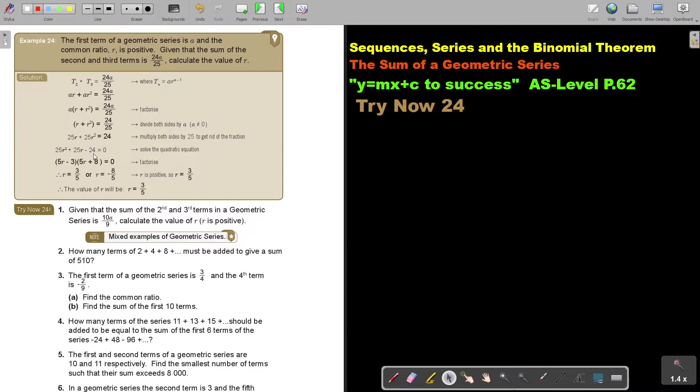There's your quadratic, there's your to the power 1, there's without a variable. And then factorize and then you get your 2. But R is positive, so it cannot be negative. So the value of R will be 3 over 5.